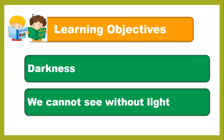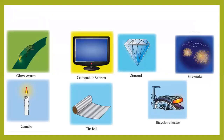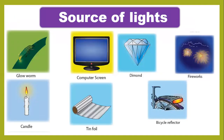In the previous class you learned about sources of light. The main source of light is the sun, and we have other sources of light like candle and torch. Without light we cannot see anything, so here are the light sources.